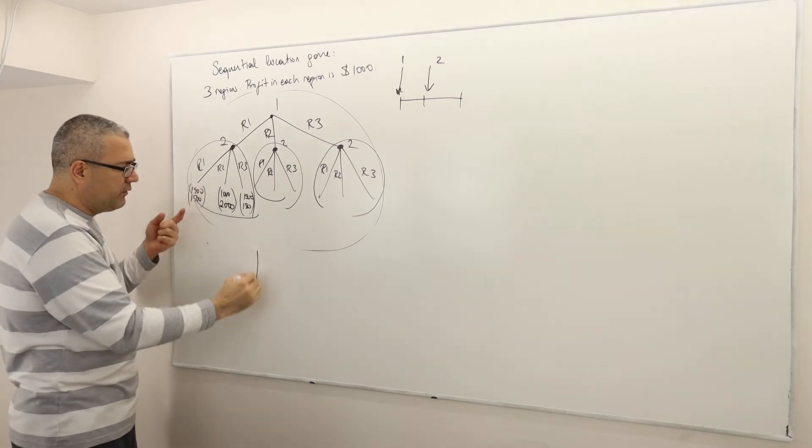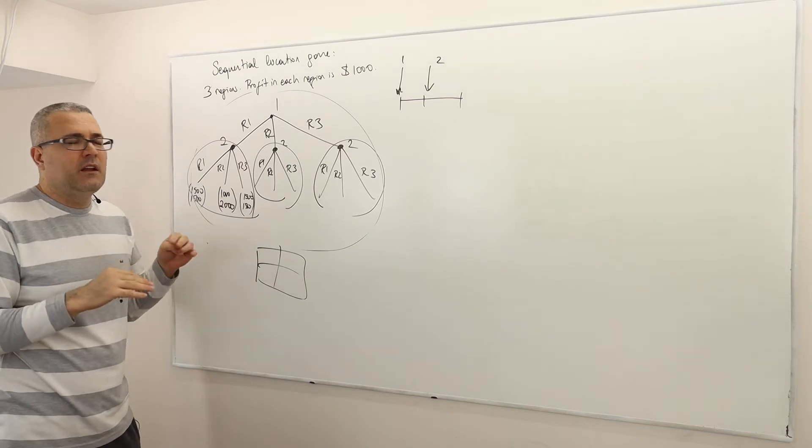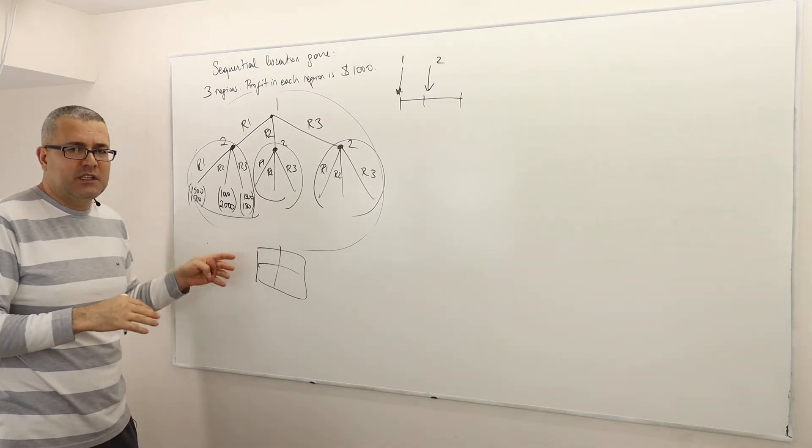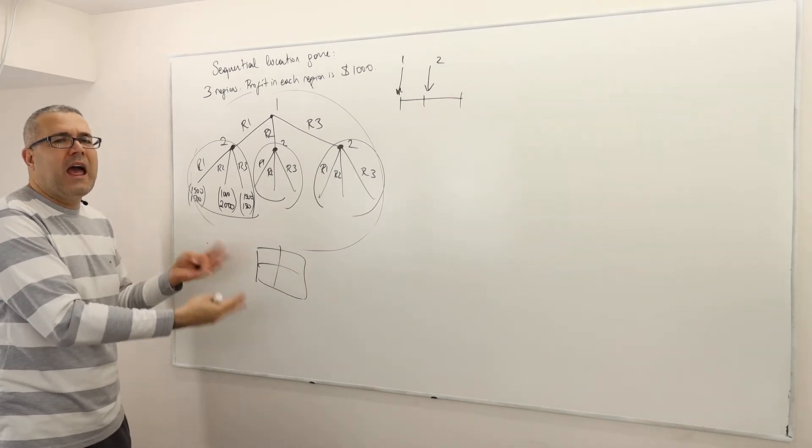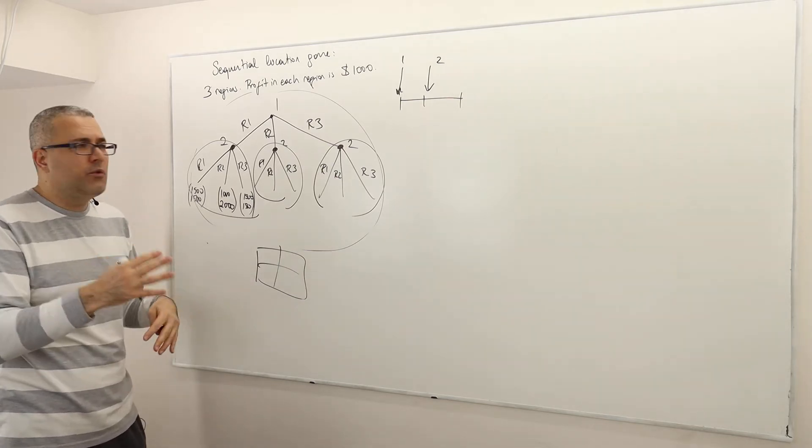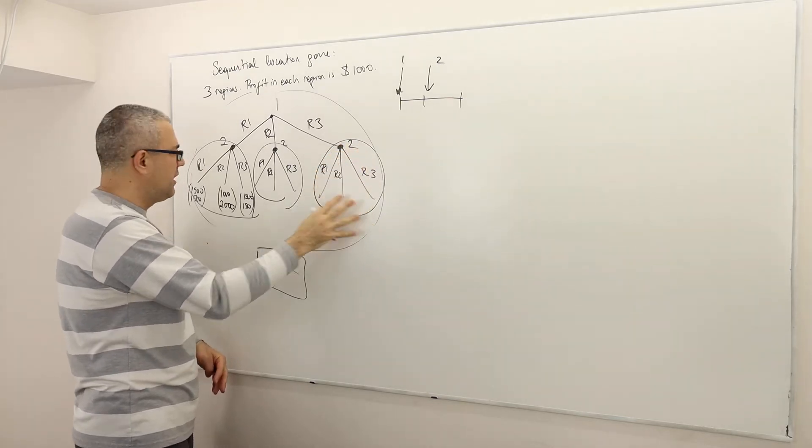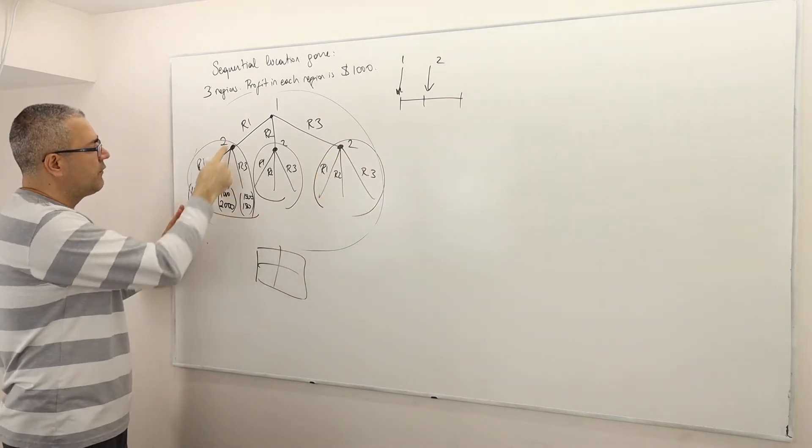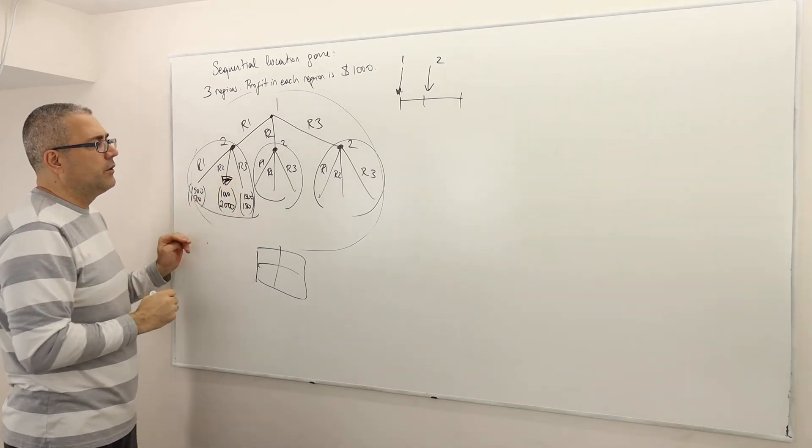Well, but do I need to write any normal form? No. Once again, if you do not have information set in your subgame, do not try to write the normal form and then the Nash equilibrium. What you have to do, you have to find the optimal strategy for player two here. I mean, here it's obvious. For player two, the optimal strategy is to choose R2.